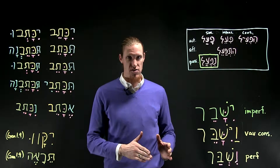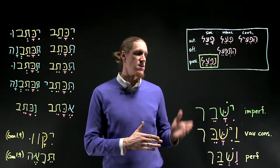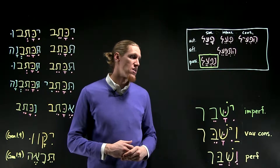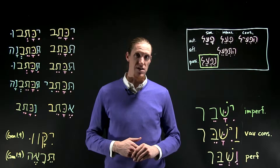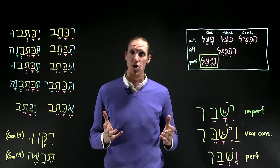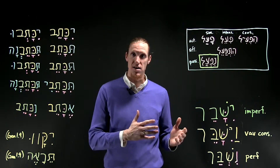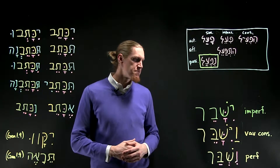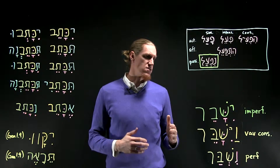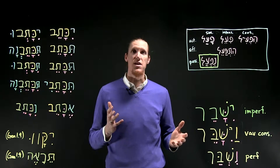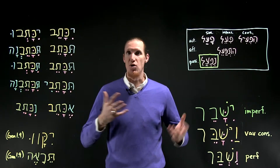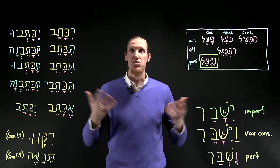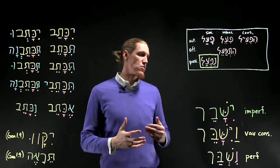In the imperfect, our vocal pattern and our visual sign is demonstrated in this model verb: yishaver. You may recall hearing this verb from Jonah in the first half of the textbook. Yishaver is the verb meaning 'he will be broken to pieces,' or 'he will be broken apart,' or 'it will be broken.'